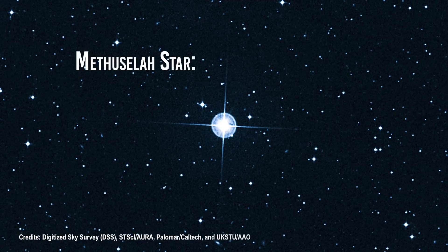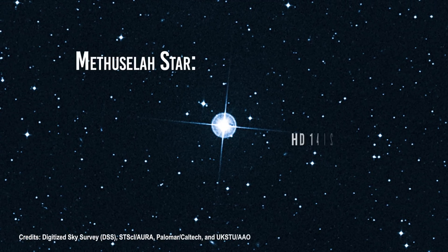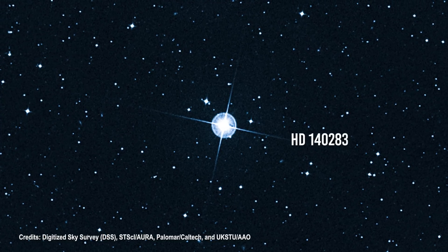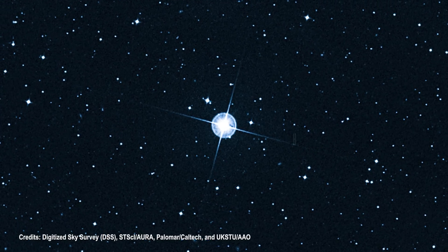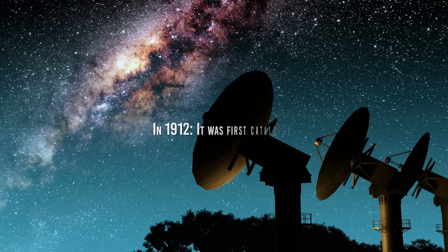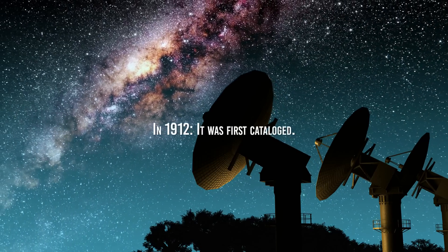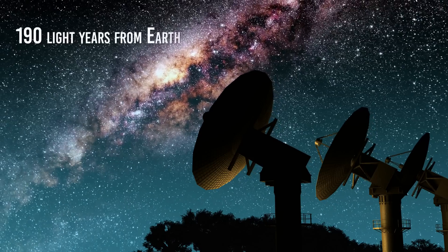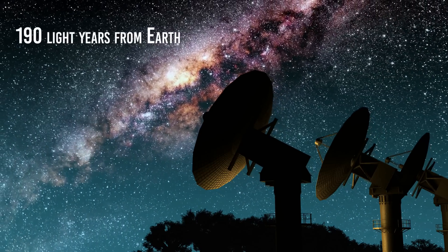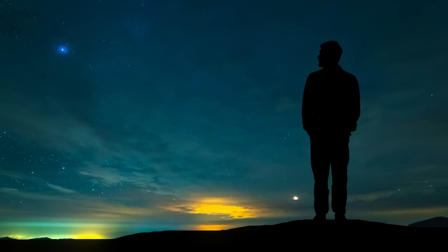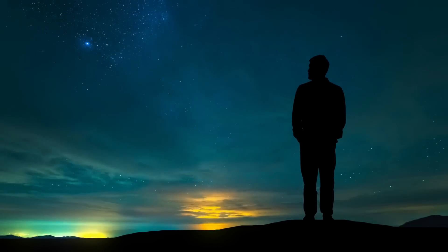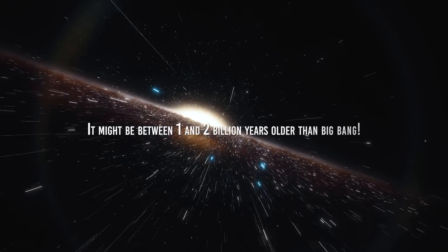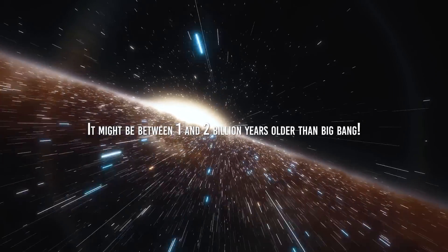The Methuselah star, also known by the very boring name HD140283, has been the subject of significant interest and debate regarding its age estimation over the years. Everything started in 1912, when it was first catalogued. Astronomers from the Mount Wilson Observatory noted it lay only 190 light-years from Earth. Early estimates suggested that this star might be older than the universe itself, which would have been a major puzzle for astrophysicists. They claimed it might be between one and two billion years older than the Big Bang.